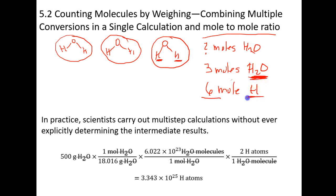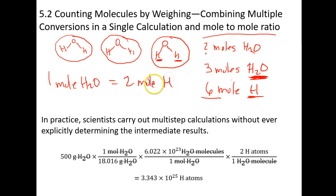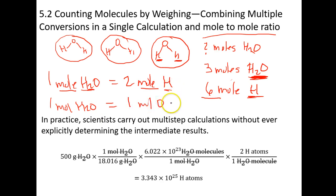Water is the whole molecule, and hydrogen is part of it. One mole of water has two moles of hydrogen. This is a mole-to-mole ratio — it's an equality, a conversion factor that converts moles of one thing into moles of something else that is related to the original compound. How many moles of oxygen are in one mole of water? One mole.